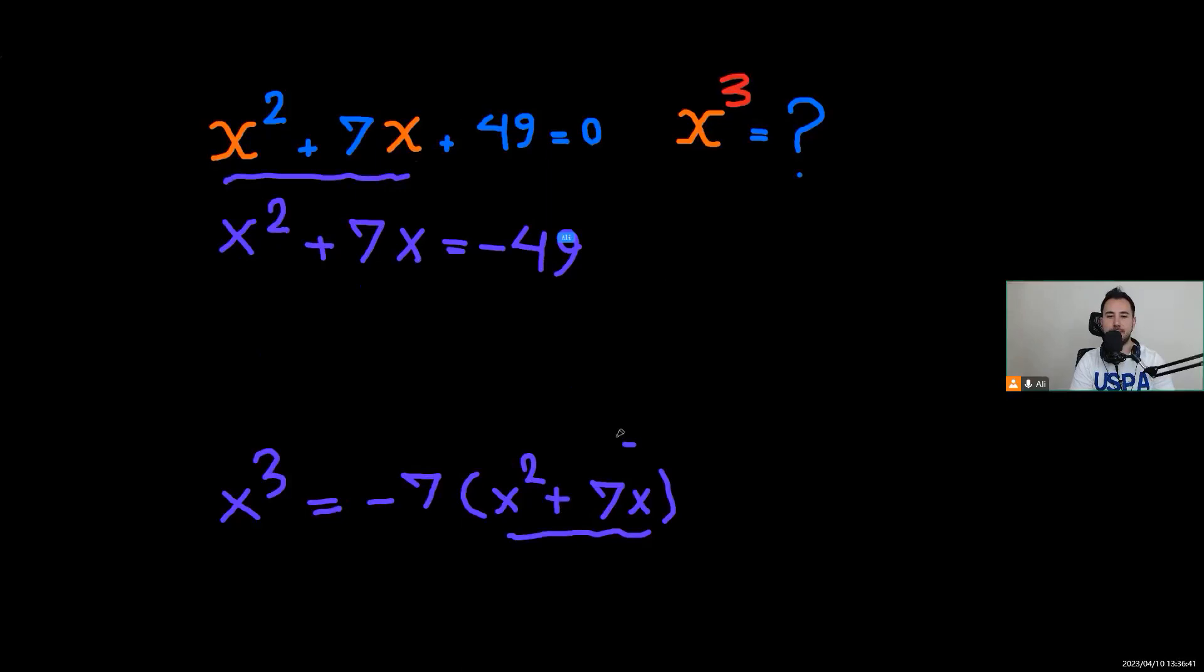So I'm going to write this: x cubed equals negative 7 times negative 49. Of course this would be x cubed equals positive 343, which is 7 cubed.